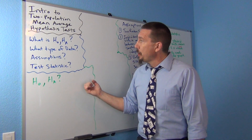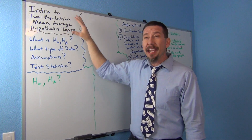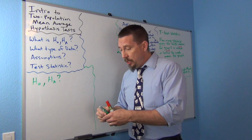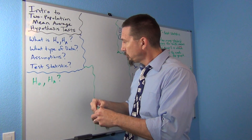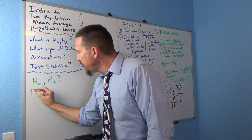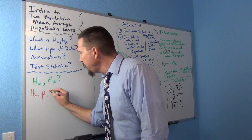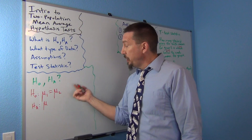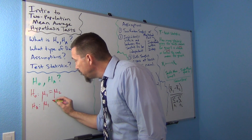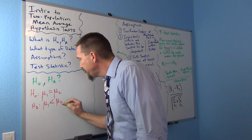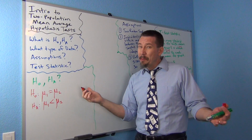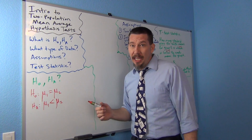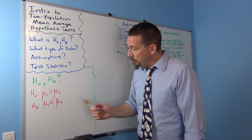We're comparing a mean average from one population to another, so the null hypothesis would look like mu1 equals mu2. The alternative could be not equal, less than, or greater than — for example, mu1 less than mu2. Remember, the Greek letter mu is used as a population mean average, similar to what we did in one population mean average tests.